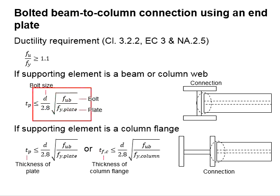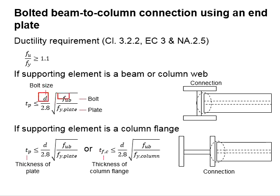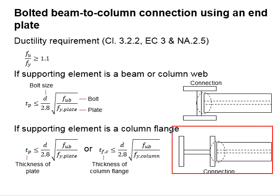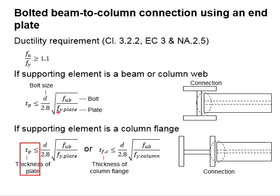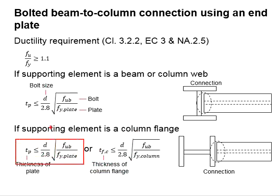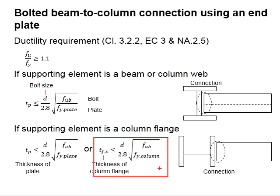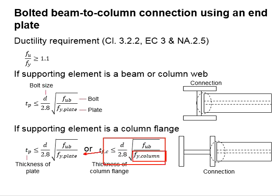If the beam is connected to the web of the column, this equation is used: the plate thickness TP shall be less than or equal to the given equation, which involves the bolt size, the ultimate strength of the bolt, and the specified yield strength of the plate. In the case that the beam is connected to the flange of the column, either of two equations must be complied with — one checks the thickness of the plate, and the other checks the thickness of the column flange.